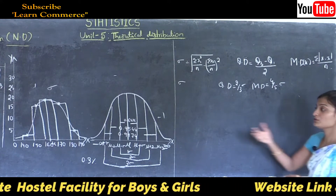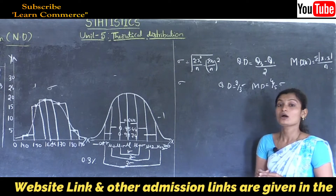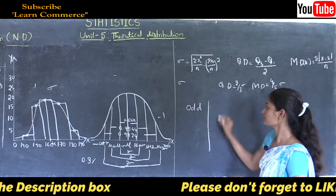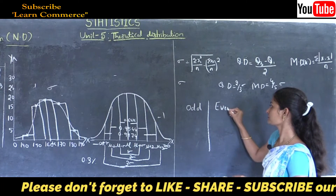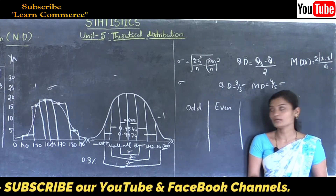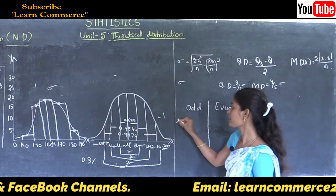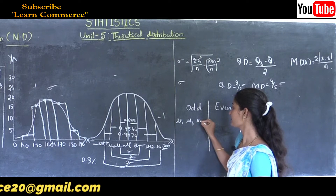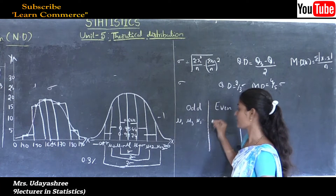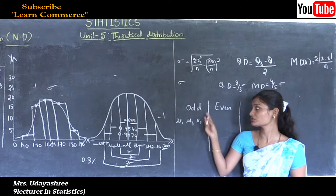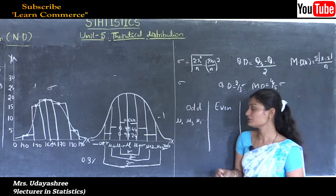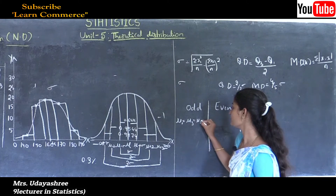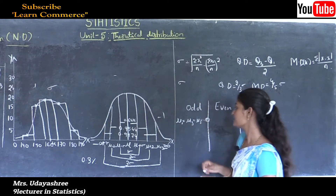Using normal distribution, we can calculate odd moments and even moments. The odd moments are mu 1, mu 3, mu 5, and so on. In normal distribution, all odd moments are equal to zero — that is, mu 1 equals mu 3 equals mu 5 equals zero.